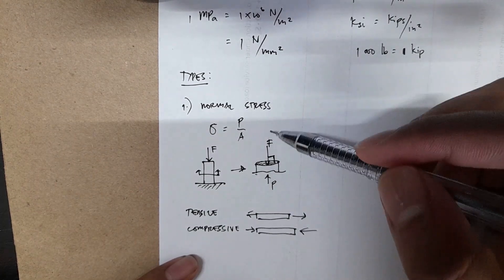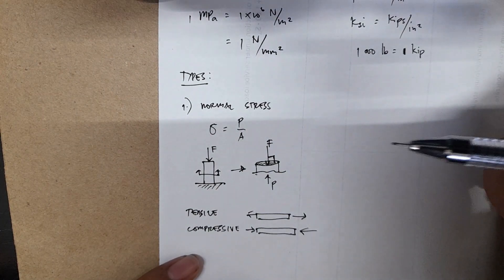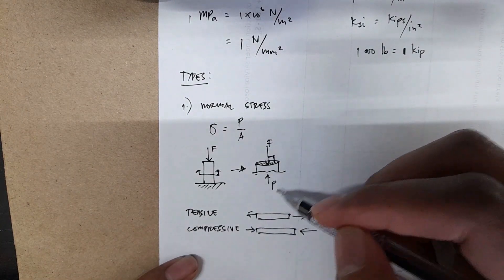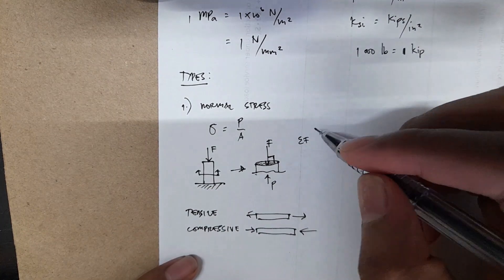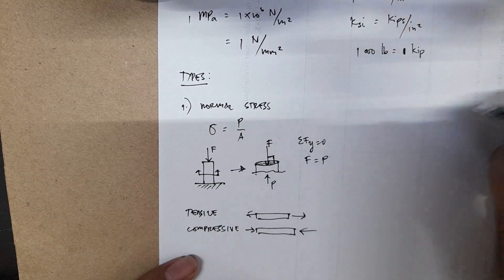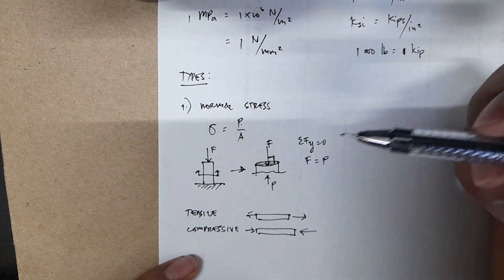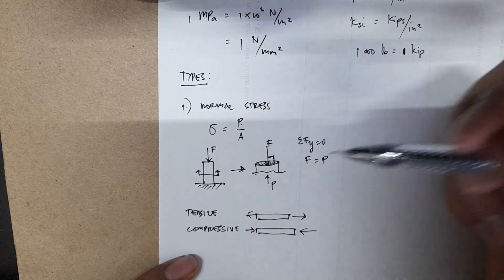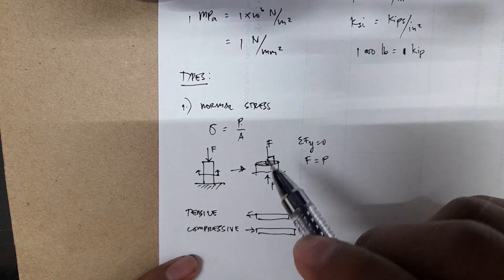The direction of your force is perpendicular to the area that carries your force. If you're given F and need to find P, just use equilibrium in the y-direction: summation of forces in y equals zero, so F equals P. Then apply sigma equals P over A, where P can be in Newtons or pounds, and the area can be pi r squared for a cylindrical post, or rectangular, depending on the problem.